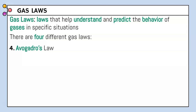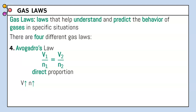Our next and last gas law is Avogadro's Law. You may know Avogadro's number, 6.022 times 10 to the 23rd — this person also has their own gas law: V1 over N1 equals V2 over N2, where N is moles. Like Charles' and Gay-Lussac's Law, this is a direct proportion: when volume goes up, the amount of gas goes up, and vice versa.